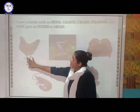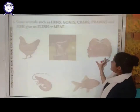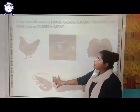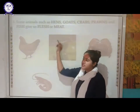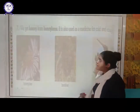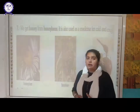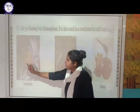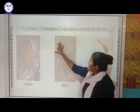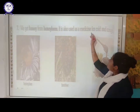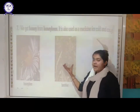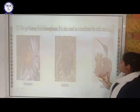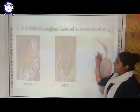As you can see in the diagram, the first is a hen, second is goat, third is a crab, fourth is prawn, and the fifth is a fish — these animals provide us flesh and meat. We also get honey from the honeybee. The honeybee collects nectar from flowers, and that honey is used as a medicine for cough and cold.